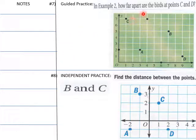In example 2, how far apart are birds C and D? We have this bird here and this bird here. How far apart are these two birds? And down here, find the distance between B and C for your independent practice.